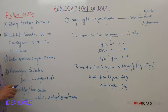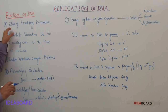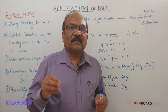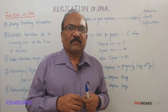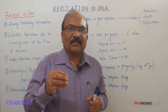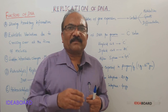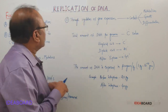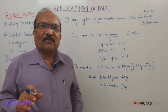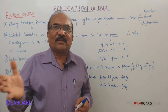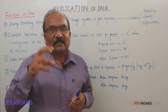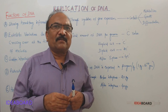Functions of DNA. The first function is it stores the hereditary information. Every organism will have certain characters and all these characters are stored in the form of DNA. That hereditary information will be transferred from parents to children and from one generation to another generation. This hereditary information is stored by the DNA.